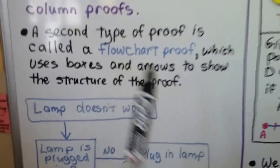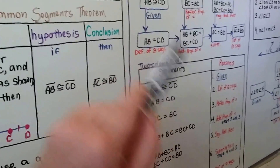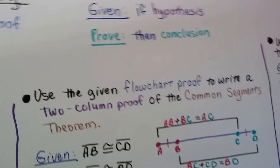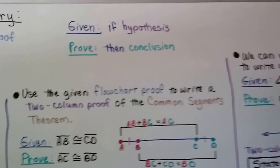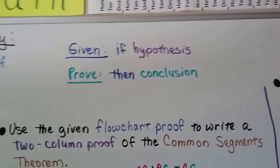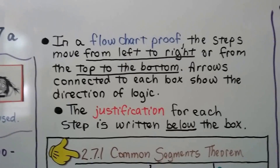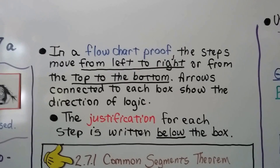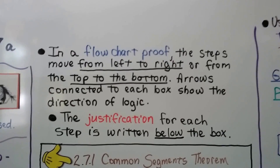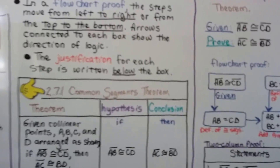A flowchart proof has the statements inside the boxes and the reasons written underneath them. We're going to be seeing given and prove. The given is the if — it's the hypothesis — and the prove is the then, the conclusion in our if-then statement. In a flowchart proof, the steps move from left to right or from top to bottom. Arrows connected to each box show the direction of logic, and the justification for each step is written below the box.